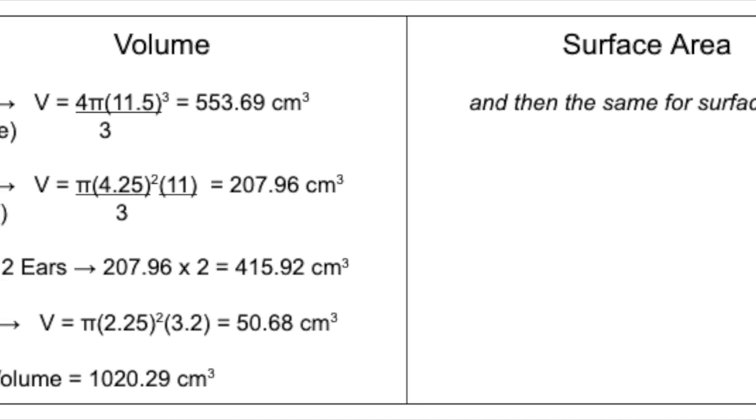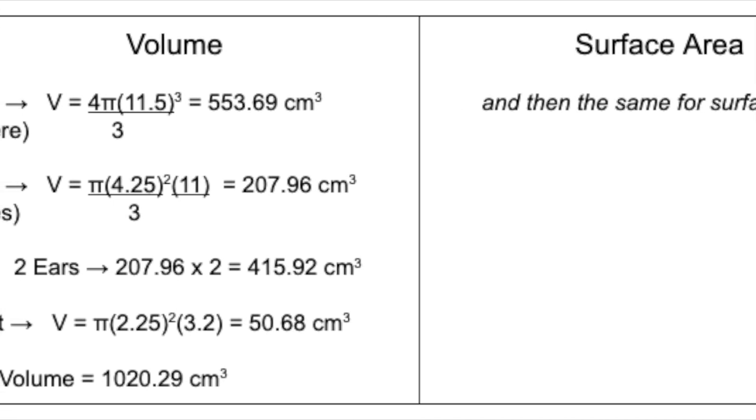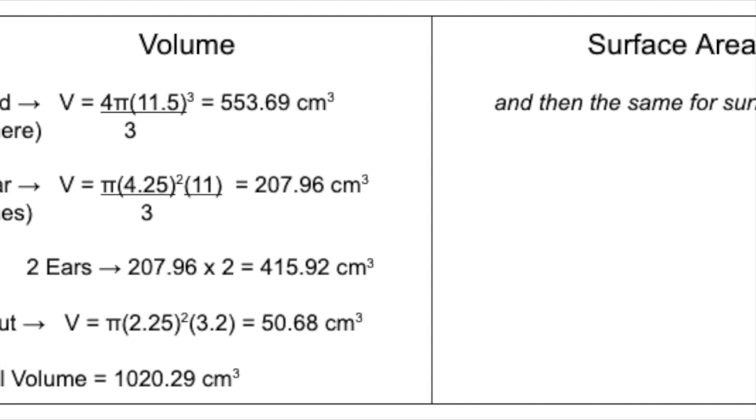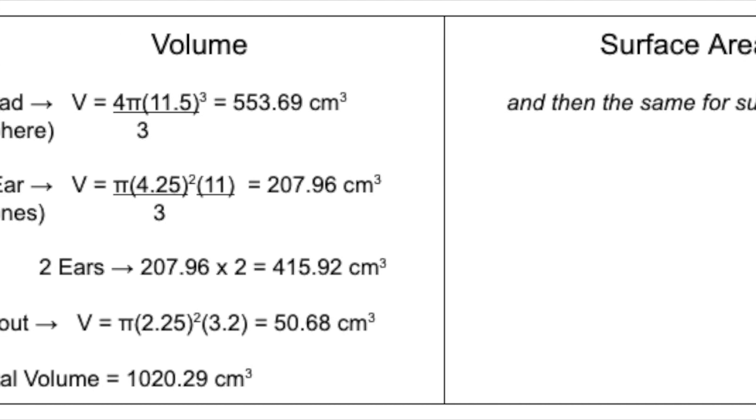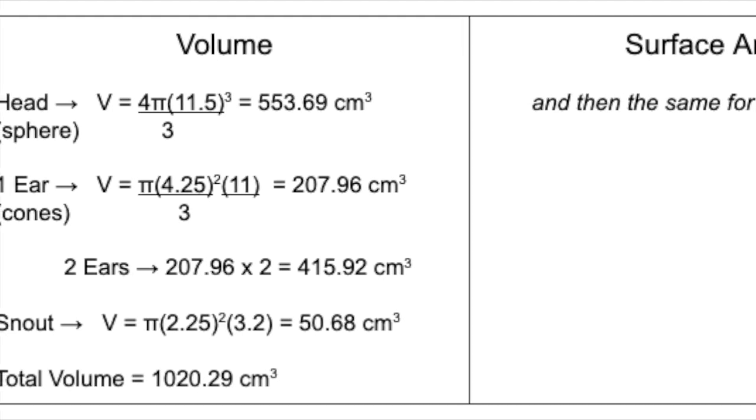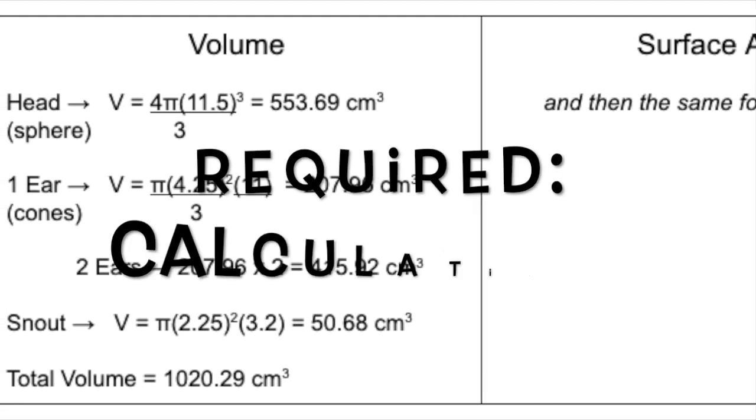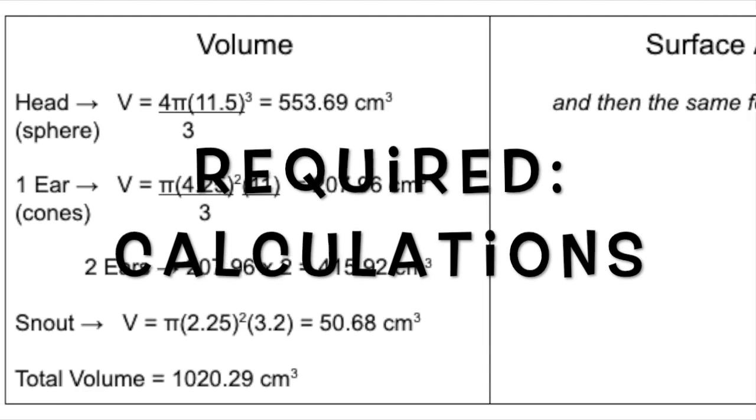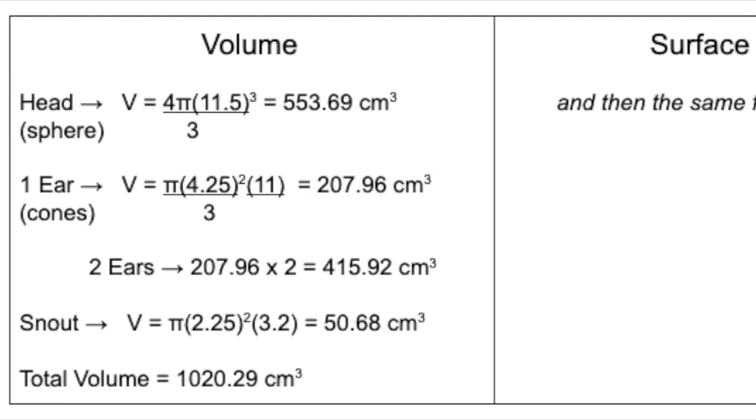For example, I would have to include the head, two ears, and snout to find the volumes and surface areas for my pig. I might organize it something like this. The engineering part, or the calculations, is the second required item of the project.